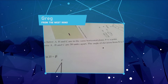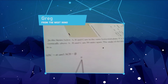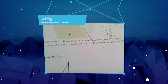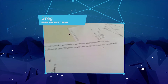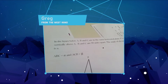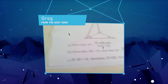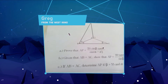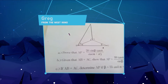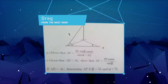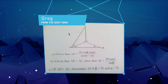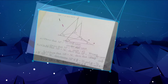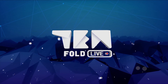B and C are 20 units apart. The angle of elevation from B to P is alpha. The question is part C: if AB equals AC, determine AP if beta equals 55 and alpha equals 75. Greg also sends a shout out to his fam.